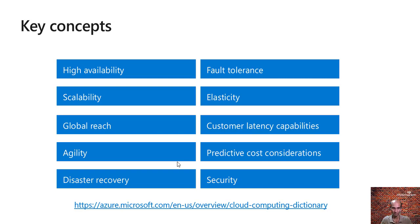This helps us achieve customer latency capabilities. Next is agility. It refers to the ability to rapidly develop, test, and launch software applications that drive business growth. You can provision resources on demand and as per the need. Similarly, you can deprovision the resources as well. This also helps in predictive cost considerations — for example, even before you deploy a service or application, the cloud computing platform will give you an indication of the predicted cost for that particular service or resource.